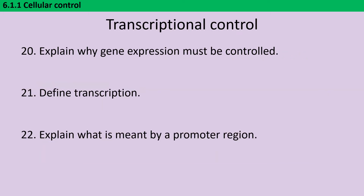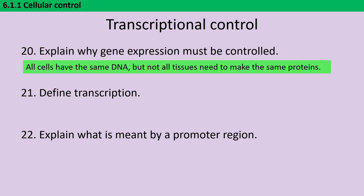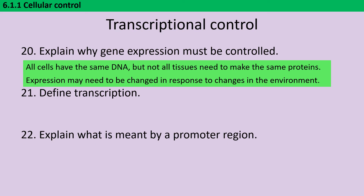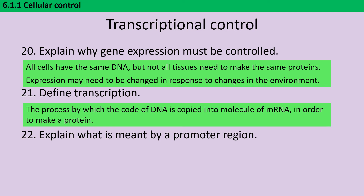Gene expression needs to be controlled because all of your cells have the same DNA, but they're not all making the same proteins. So we need some way of determining which proteins need to be expressed. Also, even within an individual cell, it may be necessary to upregulate or downregulate certain genes in response to changes in the environment. Transcription is the process where we take that DNA and copy it onto a molecule of mRNA so that it can leave the nucleus and go on to make a protein. A promoter region is a DNA sequence that sits just upstream of the gene, and proteins bind to it in order to initiate transcription.